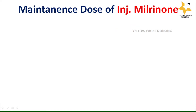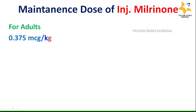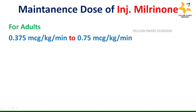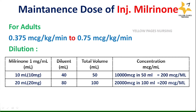The maintenance dose of injection milrinone is 0.375 microgram per kg per minute to 0.75 microgram per kg per minute. For dilution, milrinone is diluted in various forms; however, once diluted, the concentration will be 200 microgram per ml.